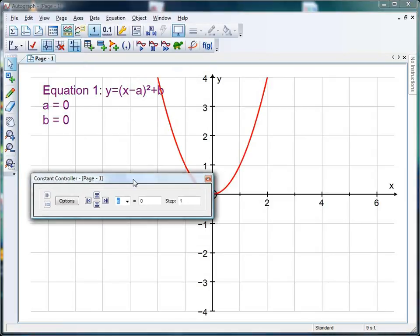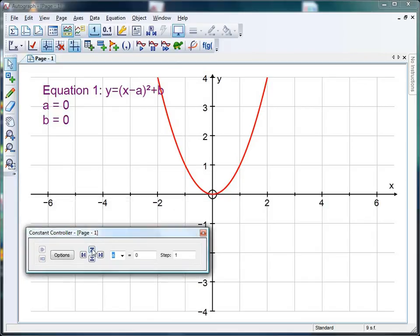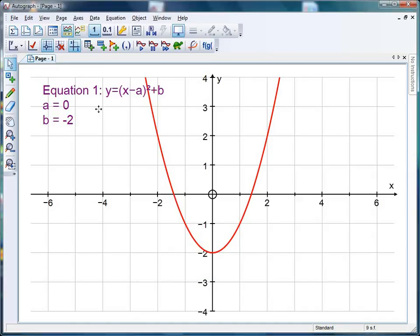Now again I can experiment with what happens when I alter those constants, always getting students to predict. If I increase the value of a, the graph seems to move to the right, and vice versa if I decrease. If I increase the value of b, it moves up, and decrease it moves down. So get the students to experiment with that. We are going to do a specific video on transforming graphs next week with a bit of f of x, so get ready for that one.